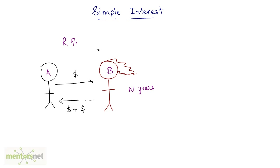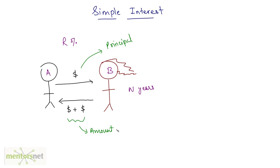So let us look at the terminology. The money given by A to B — that means the money lent or the money borrowed — is known as principal. And the total money returned is known as the amount, which is basically the principal amount plus the interest.